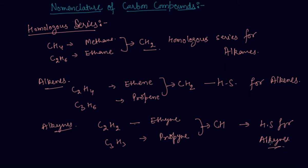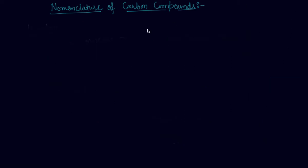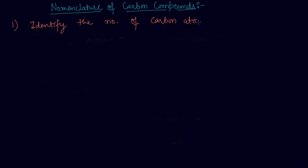Now I hope you are pretty clear about what a homologous series is. Let's now discuss the nomenclature of carbon compounds in detail. There are some steps we have to follow. The first step is to identify the number of carbon atoms in the compound.